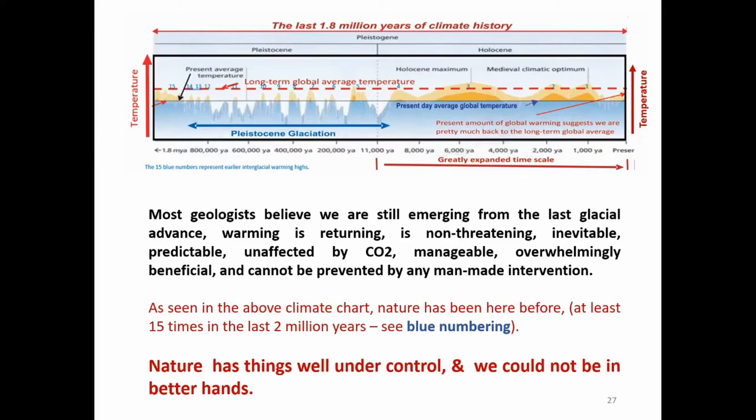As seen in the above climate chart, nature has been here before, at least 15 times in the last 2 million years. Nature has things well under control and we could not be in better hands.